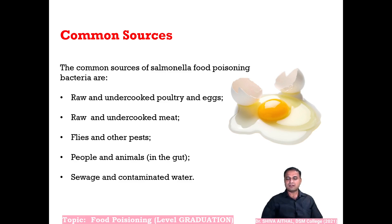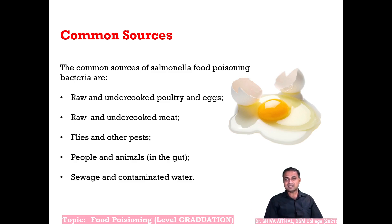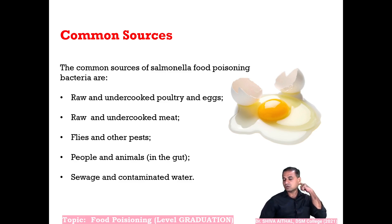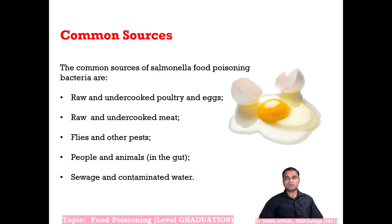Common human sources include raw and undercooked poultry and eggs, raw and undercooked meat, flies and other pests as cross-transmitters, people and animals harboring organisms in their gut, sewage and contaminated water. Unauthorized restaurants, roadside vendors, and street hawkers often do not follow basic hygiene practices and are among the biggest carriers of salmonellosis and other bacterial food poisoning.